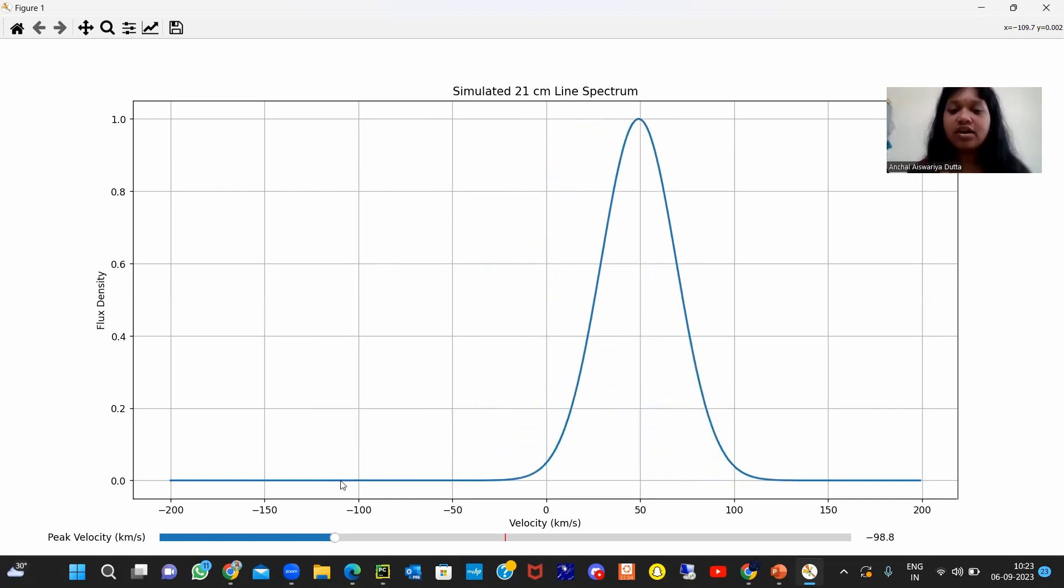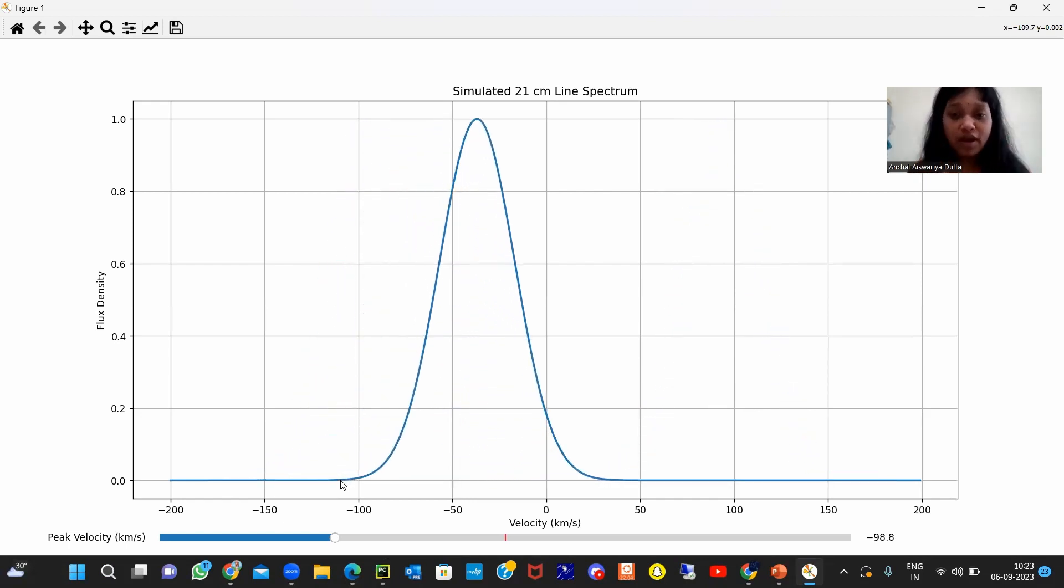Now what is the physical interpretation of it? It actually helps understand how the Doppler effect causes the 21 centimeter line to shift in wavelength and how this shift is reflected in the observed spectrum.